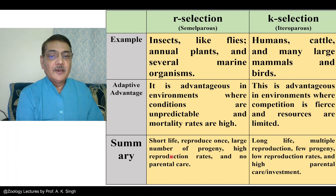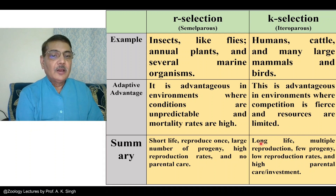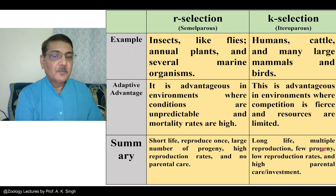R selection organisms have high reproduction rates and show no parental care. Whereas in the case of K selection, the life span is quite long, multiple reproductions occur, few progeny are produced, there are low reproduction rates, and high parental care or investment.